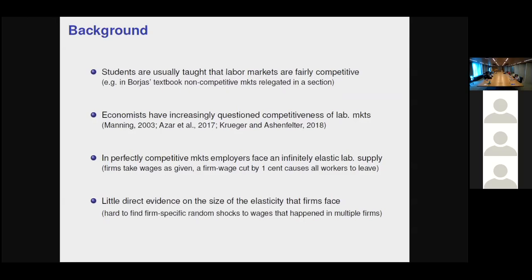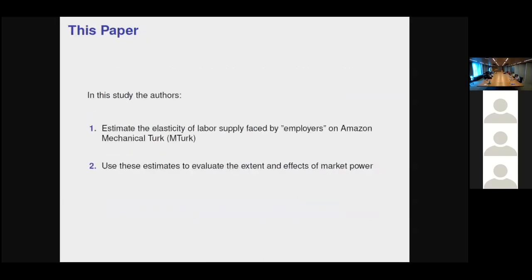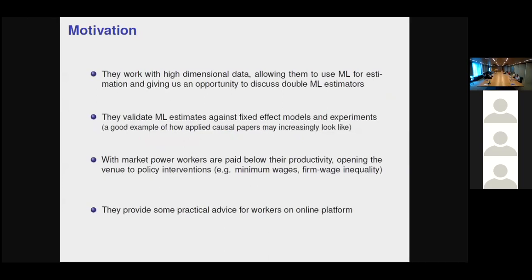With this in mind, what they do in this paper is use one specific labor market — the MTurk Amazon Mechanical Turk labor market — which is an online web labor market where employers post jobs and employees accept or not. Based on this setting, they estimate the labor supply elasticity and then use this estimate to evaluate the extent and effects of monopsony in this specific labor market.